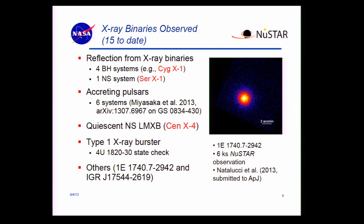So far we've observed 15 X-ray binaries with NuSTAR. Five were observed for studying reflection components, six are accretion pulsars, one is a quiescent neutron star low-mass X-ray binary, one is a type 1 X-ray burster — we just did a quick observation to check the state — and then two other observations. NuSTAR emphasizes imaging, but for X-ray binaries everything's a point source, so here's your one NuSTAR image of a point source — every other X-ray binary looks the same.